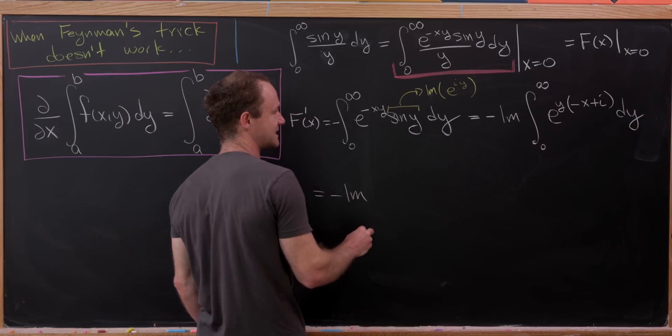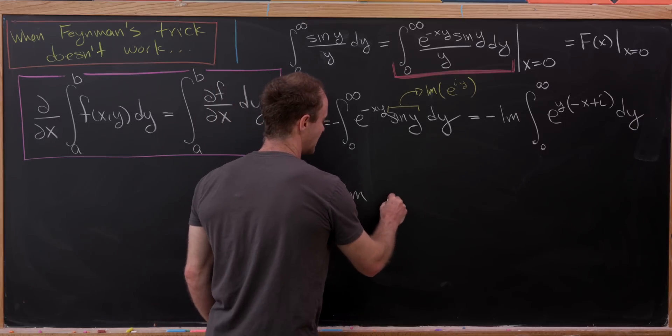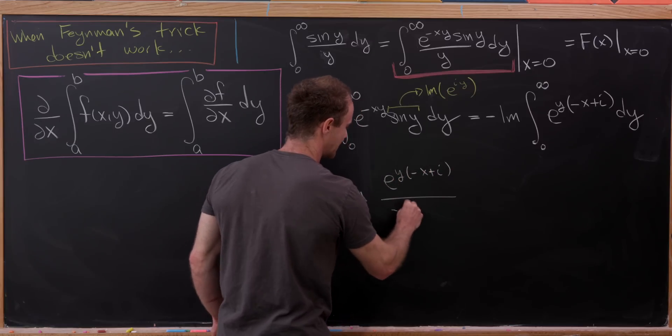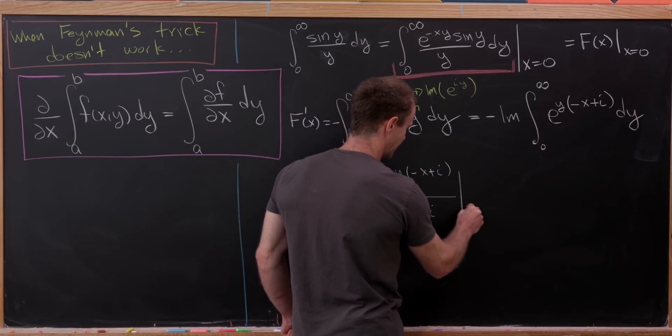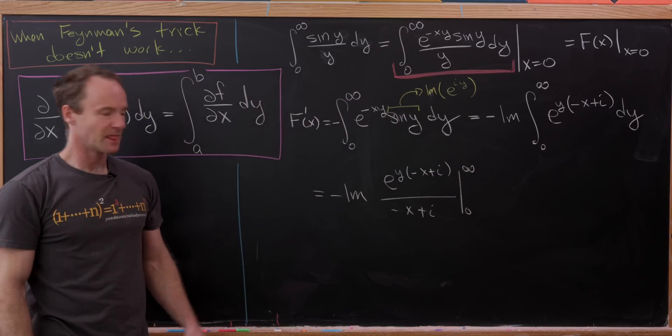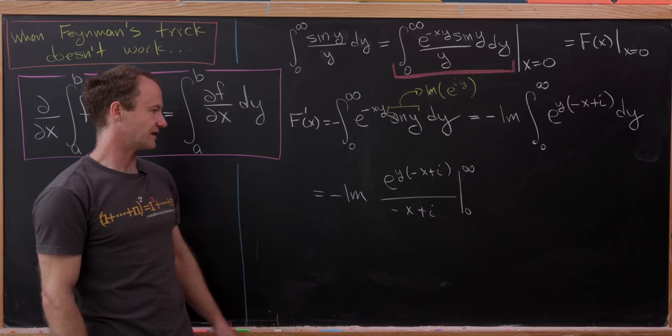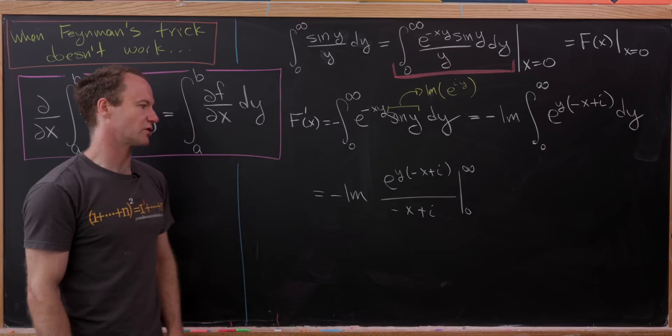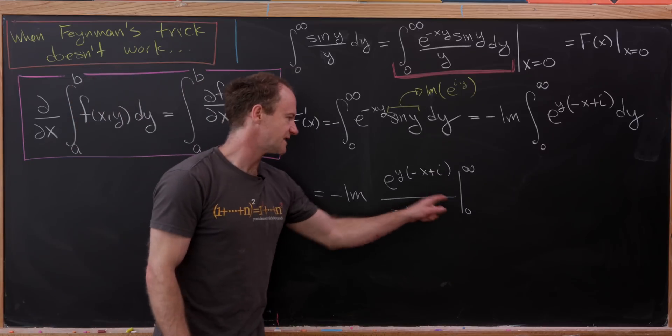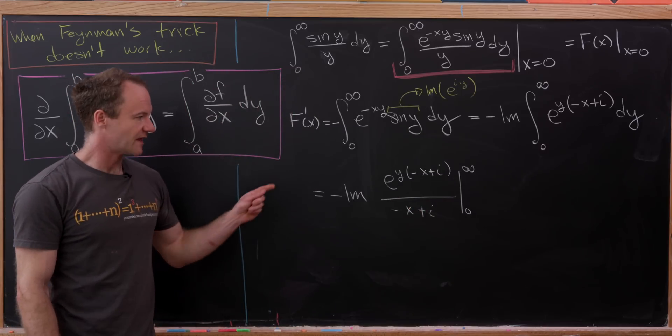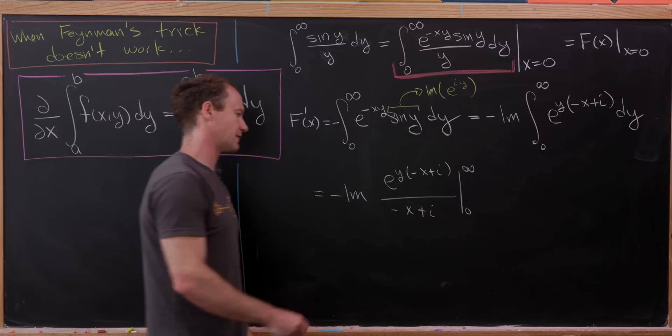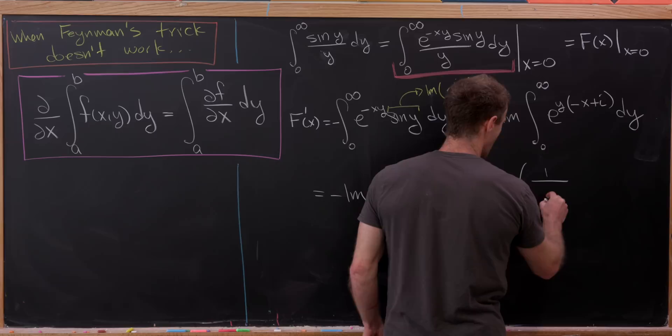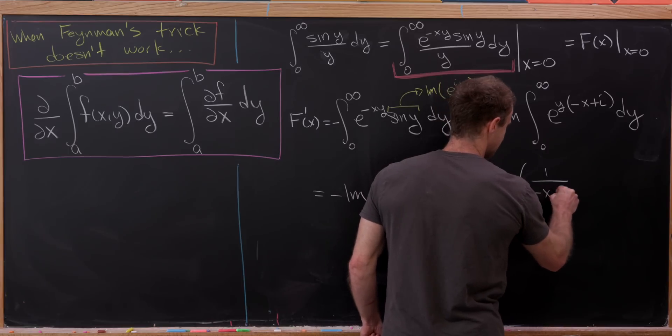We have minus the imaginary part, and then we'll have e to the y times minus x plus i over minus x plus i, evaluated from zero to infinity. That's really y approaching infinity. But let's notice if y is approaching infinity, this numerator is approaching zero. If y is equal to zero, this numerator is equal to one. That's the lower bound, so that'll cancel out with this minus sign, leaving us with the imaginary part of one over minus x plus i.